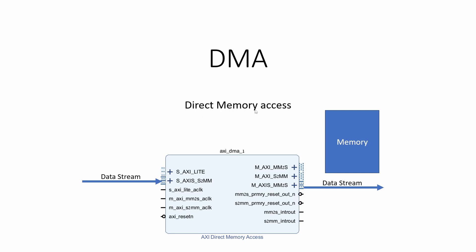DMA, Direct Memory Access, is a very useful tool. It can take an incoming data stream and write it to a memory location, and it can do the other way around — it can take a memory location and generate a data stream, all without CPU intervention.